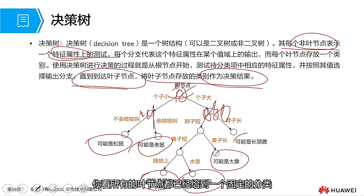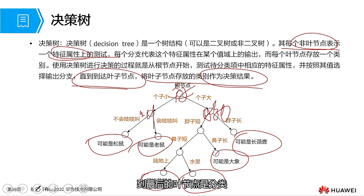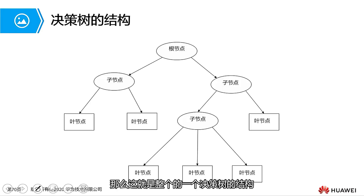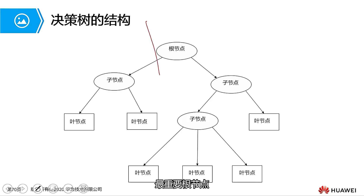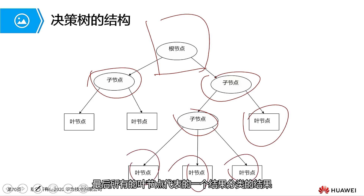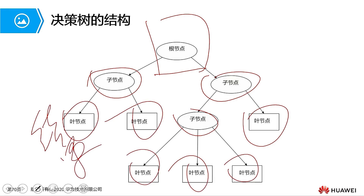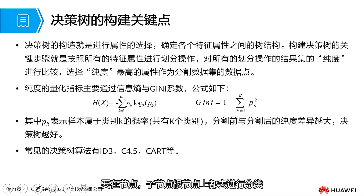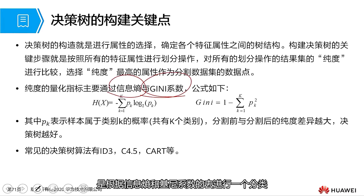Branching on each feature all the way to the end gives one possible outcome, completing a decision tree. The entire decision tree structure has three most important parts: there is only one root node at the top, each child node represents many features, and the final leaf nodes each represent a result classification. What is a key point in building decision trees? Classification at each node is based on information entropy and the Gini coefficient — comparing the purity of all partitioning operation results. This purity we usually use information entropy and Gini coefficient to serve as quantitative measures.